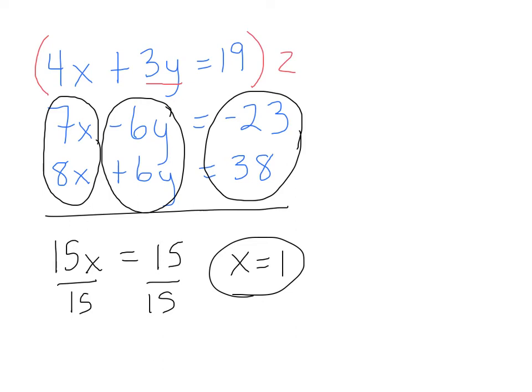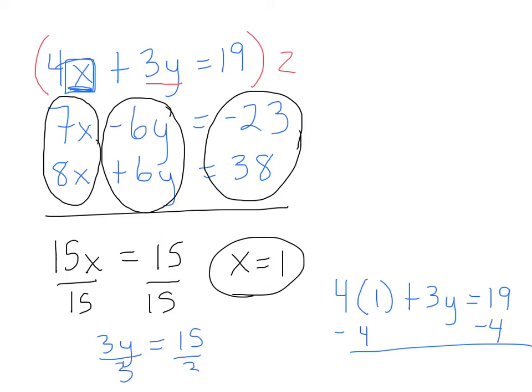So what I'm going to do is I'm going to go ahead and plug it in for this x right here at the very top. So I've got 4 times 1 plus 3y equals 19. And so I'll subtract 4 on both sides. And so I have 3y equals 15. I'll divide 3 on both sides. So y equals 5.